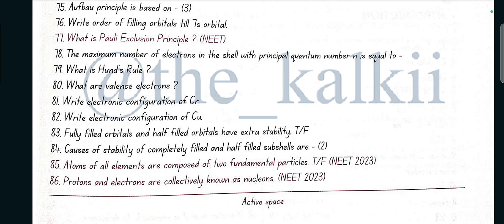What is Pauli exclusion principle? No two electrons in an atom can have the same set of four quantum numbers. The maximum number of electrons in the shell with principal quantum number n is equal to 2n square. What is Hund's rule? Pairing of electrons in the orbitals belonging to the same subshell does not take place until each orbital belonging to that subshell has got one electron each, i.e., it is singly occupied.